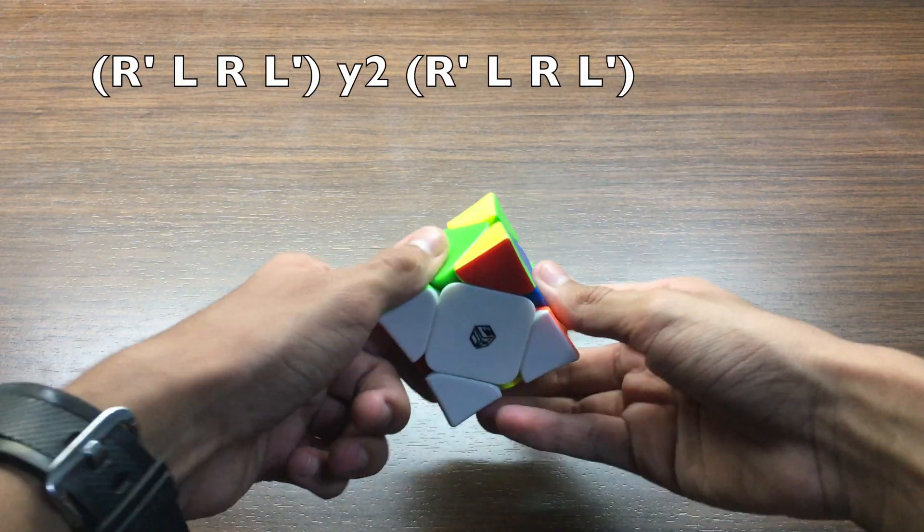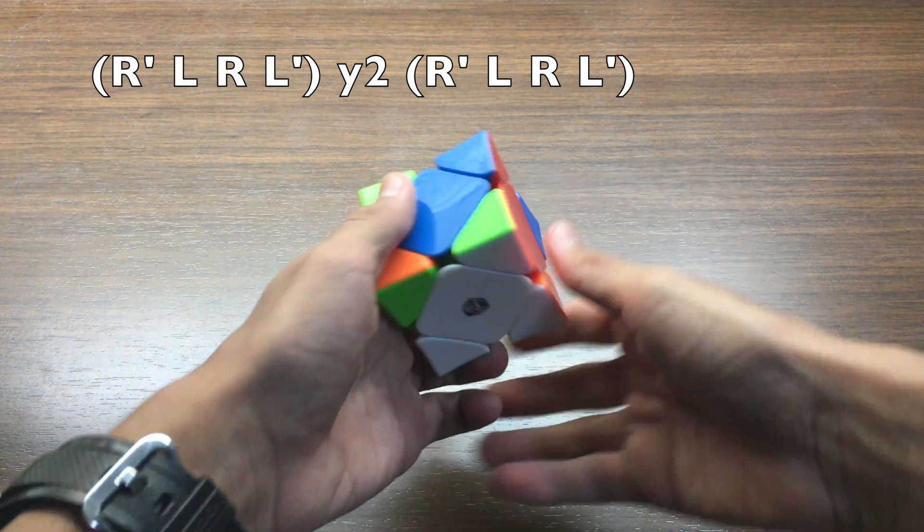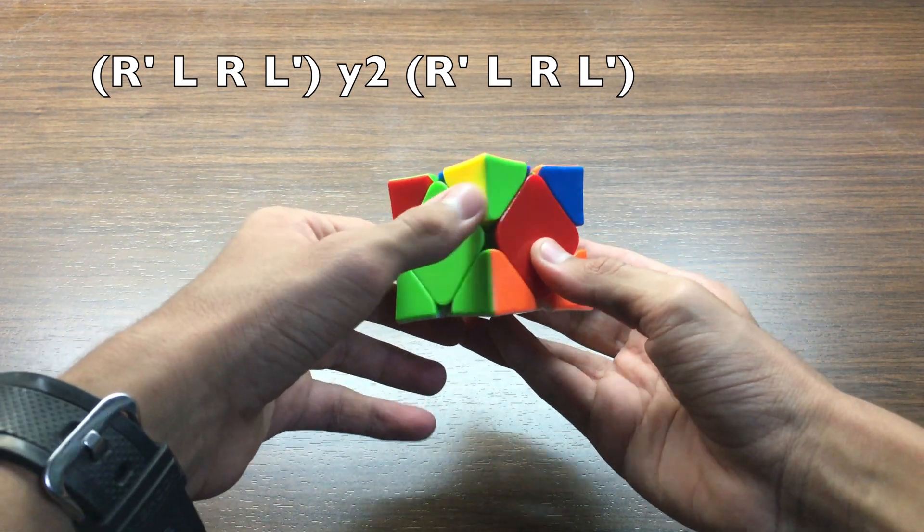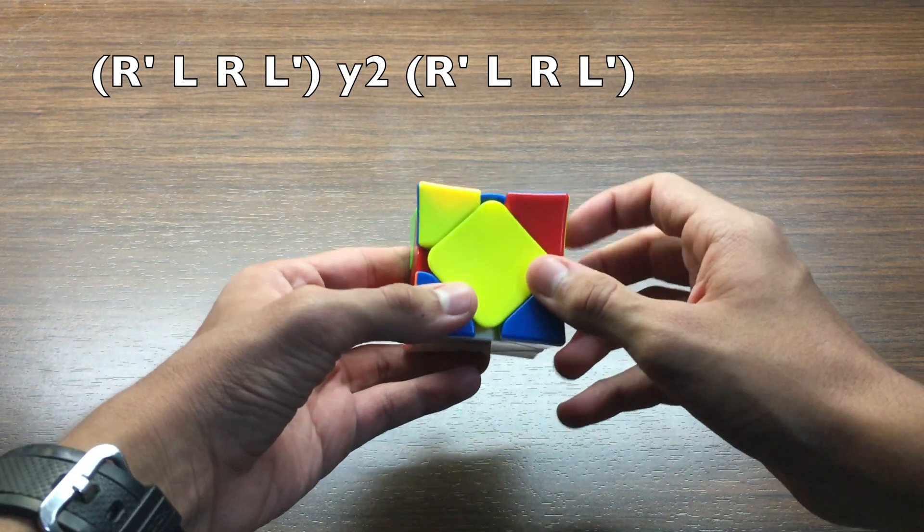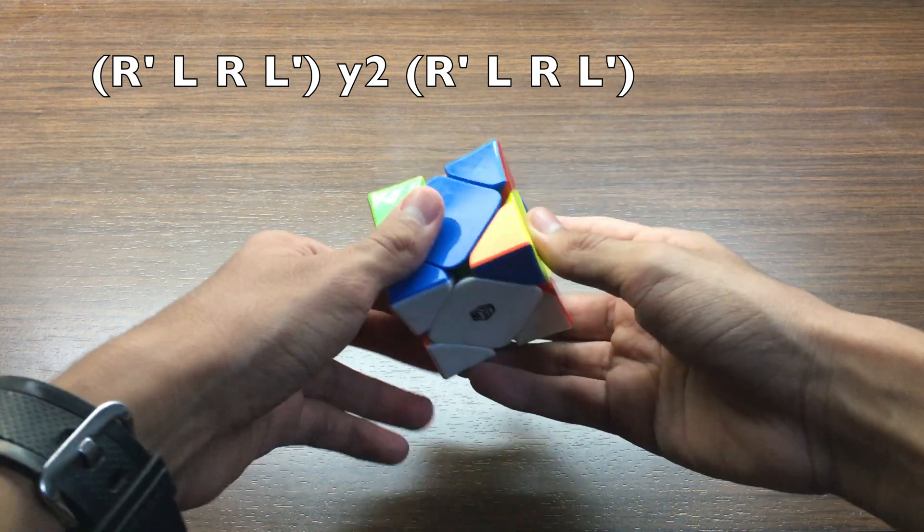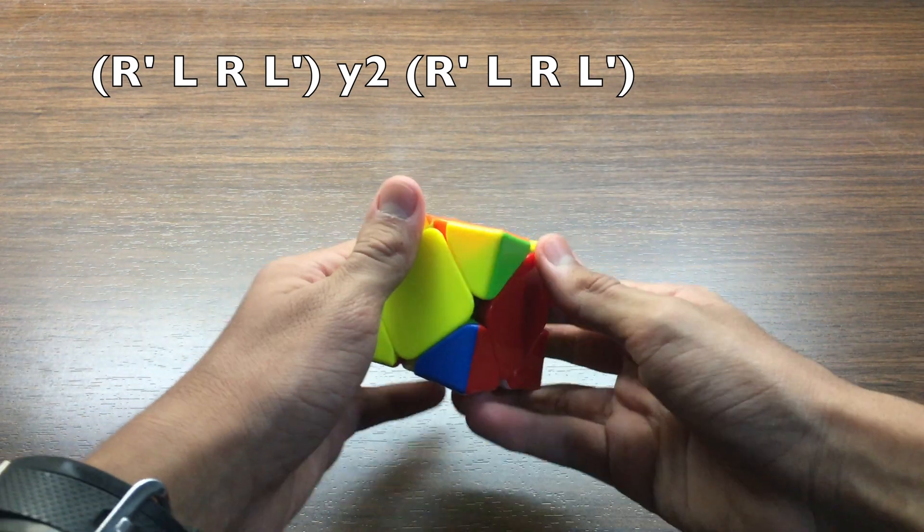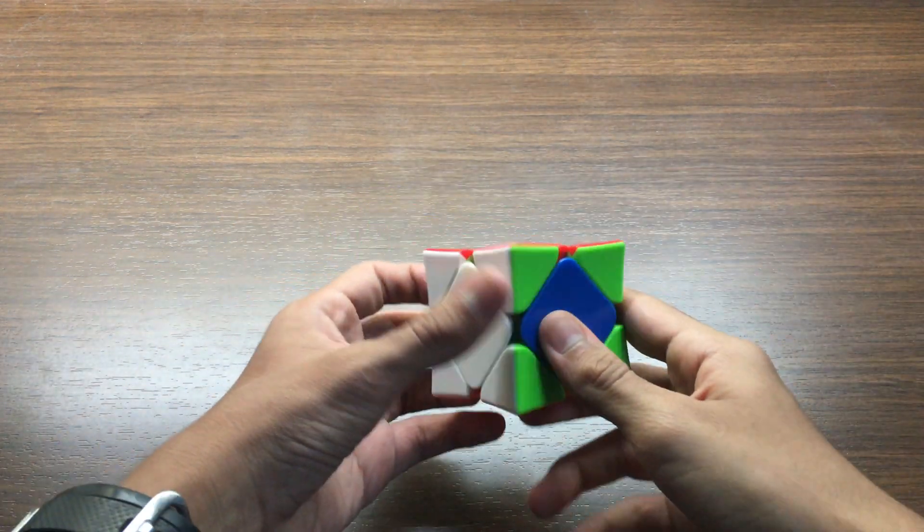R prime L R L prime, which is basically a sledgehammer, then you rotate twice, then you do R prime L R L prime. And here's how the algorithm looks fast.